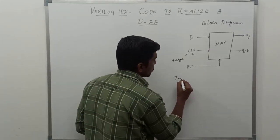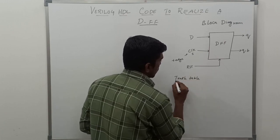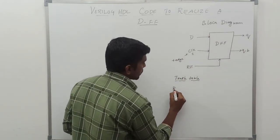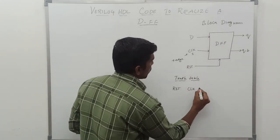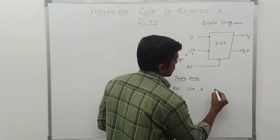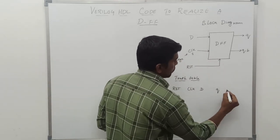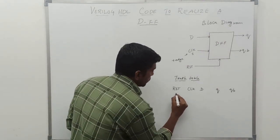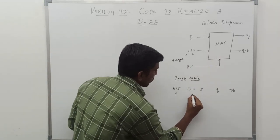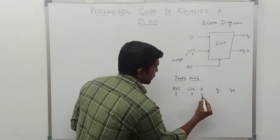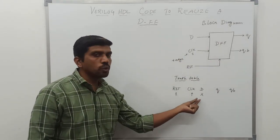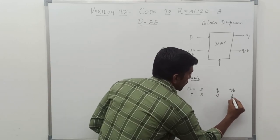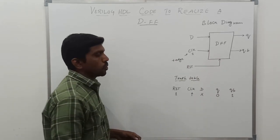Now I write the truth table of D flip-flop. The input signals are three: reset, clock, and data. The output of the D flip-flop is Q and QB. Let us consider the first case — reset value is 1, clock signal is high. The D value is a don't care value, either 0 or 1. In this case, Q value is 0 and Q bar value is 1, just the complement of Q.